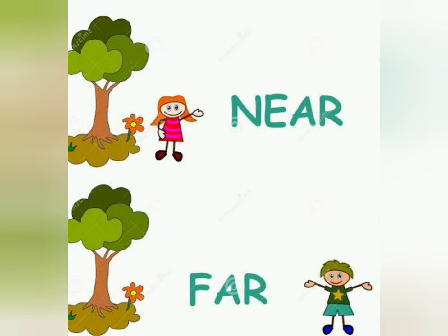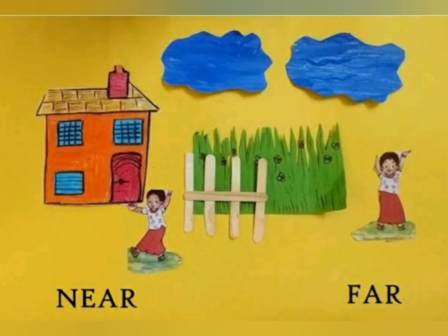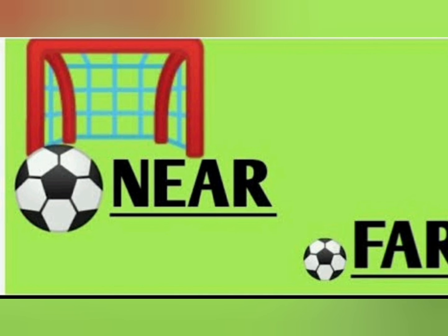Now in the next picture, see the girl is near to the house and the other girl is far from the house. See here, the ball is near to the goal and the other ball is far from the goal post. That is called the goal post.